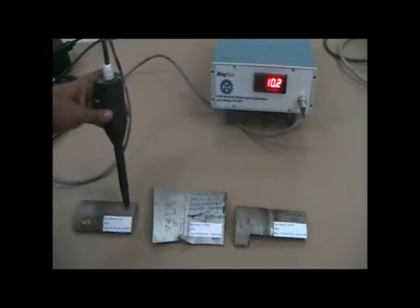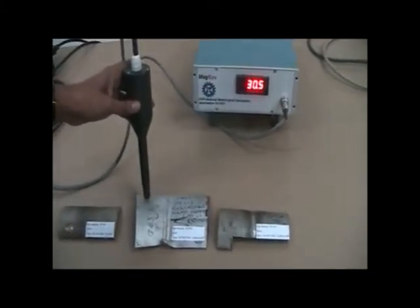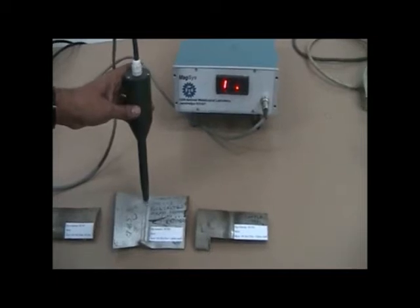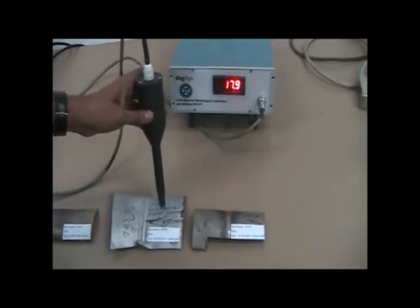However, in the second and third weldment, a high sensor output is observed due to the presence of ferromagnetic carbon steel as root material over which 304 stainless steel is present.